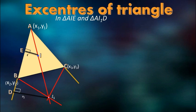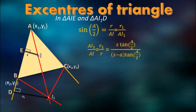In triangle AIE and triangle AI1D, sine of angle A by 2 equals R by AI and also equals R1 by AI1. So we can write AI1 by AI equals R1 by R equals S tan(A/2) by (S-A)tan(A/2). Here S is the semi-perimeter and this formula is from the properties of triangle and especially properties of inradiuses and exradiuses.